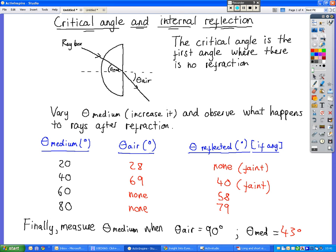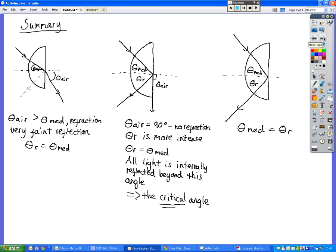So if we look at the three situations, the first of which is before we reach the critical angle, the angle in the medium is not sufficient to cause internal reflection. We still get a faint line being reflected back the way, but most of the light is still being refracted through the glass and emerging onto the other side.